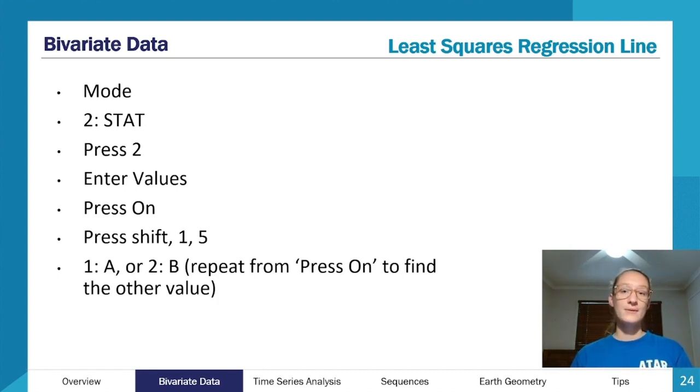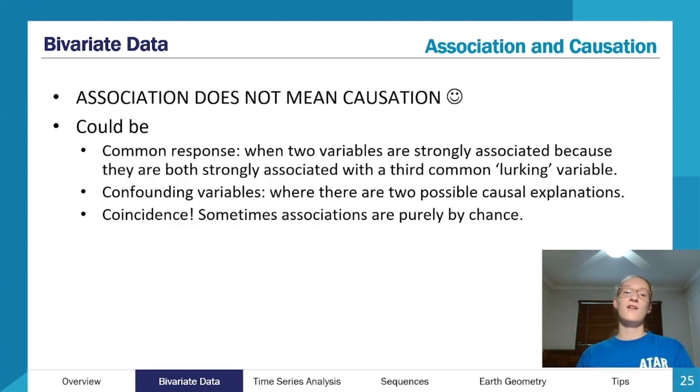Another word of caution here is it's important to make sure that you've got your x, what you've classed as your x value, is consistent, and your y value is consistent. Because if you flipped your x and your y values, you would get different variables. That's why it's important to identify what's your explanatory variable and what's your response variable right at the start.